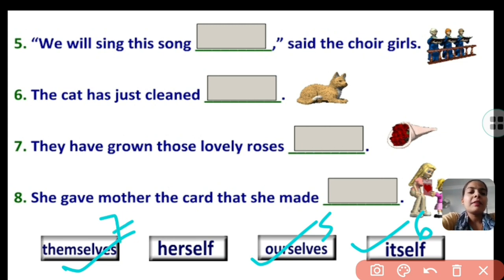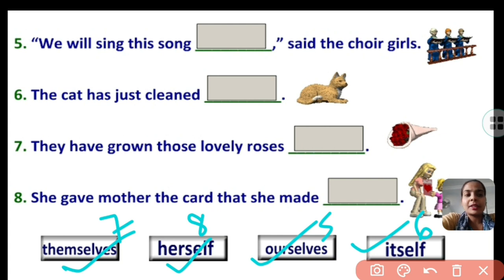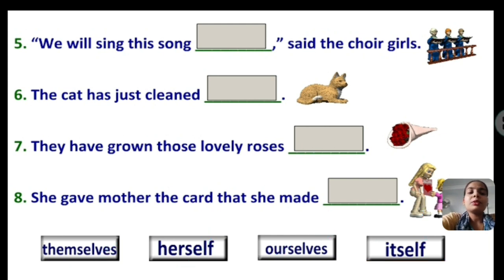She gave mother the card that she made herself. So herself is number eight. I hope students, you have understood these exercises very well — how and where to use emphatic and reflexive pronouns. I will see you soon in the next class with the next topic. Take care. Bye bye. Thank you so much.